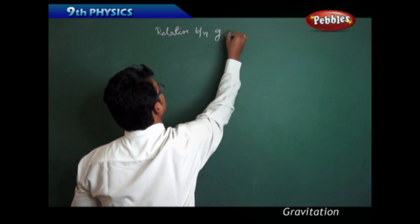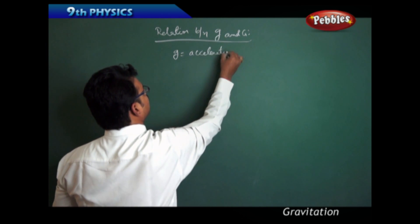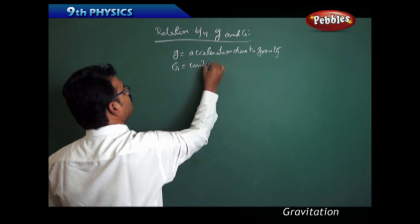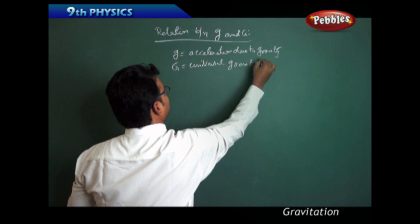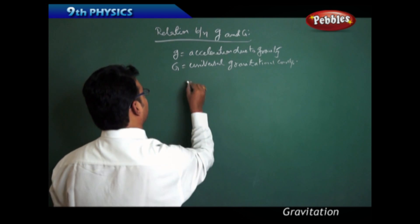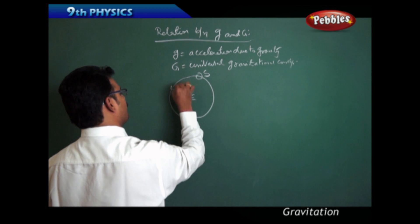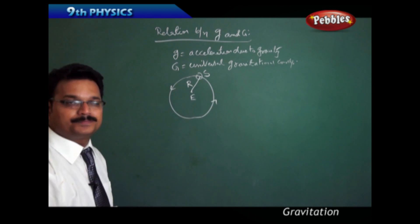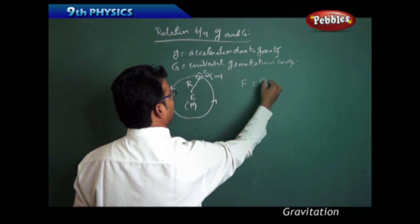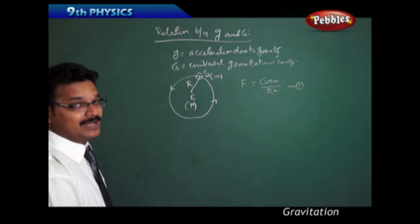Now we'll see the relation between small g and capital G. Small g is the acceleration due to gravity, and capital G is the universal gravitational constant. Consider a satellite rotating around the Earth at distance R, where the Earth's mass is capital M and the satellite's mass is small m. By the law of gravitation: F = G·M·m / R².